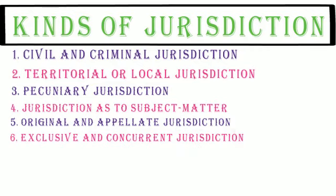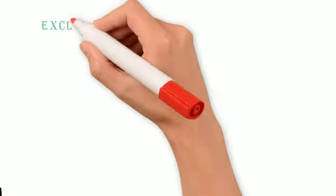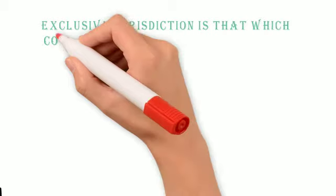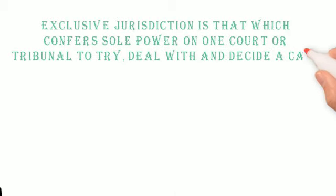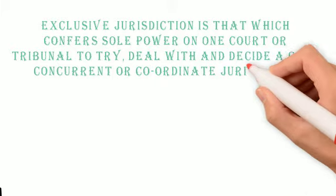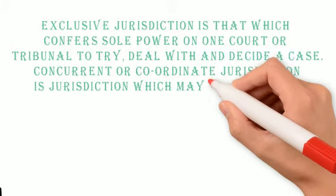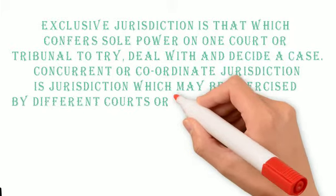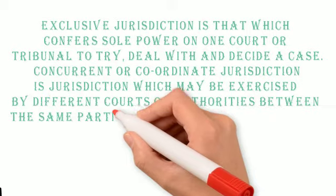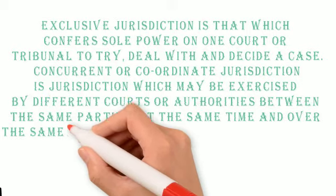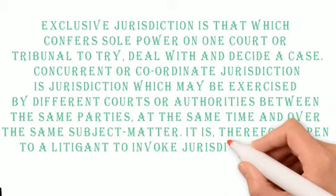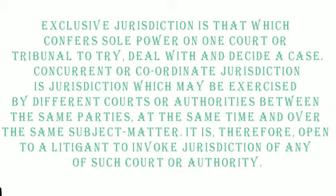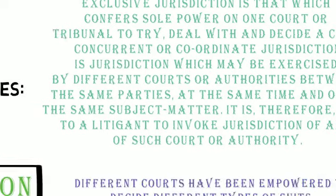6. Exclusive and Concurrent Jurisdiction: Exclusive Jurisdiction is that which confers sole power on one court or tribunal to try, deal with, and decide a case. Concurrent or co-ordinate jurisdiction is jurisdiction which may be exercised by different courts or authorities between the same parties at the same time and over the same subject matter. It is therefore open to a litigant to invoke the jurisdiction of any of such court or authority.